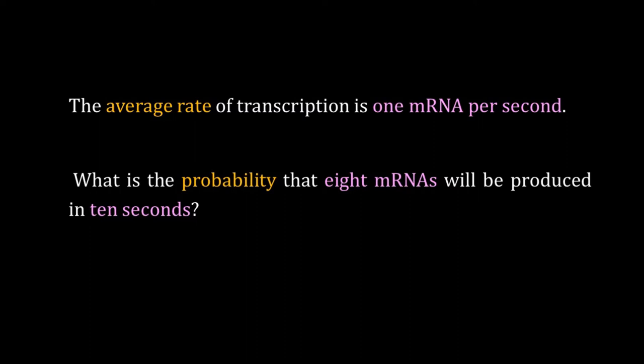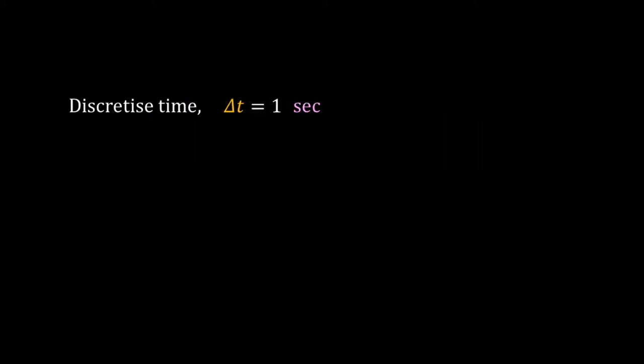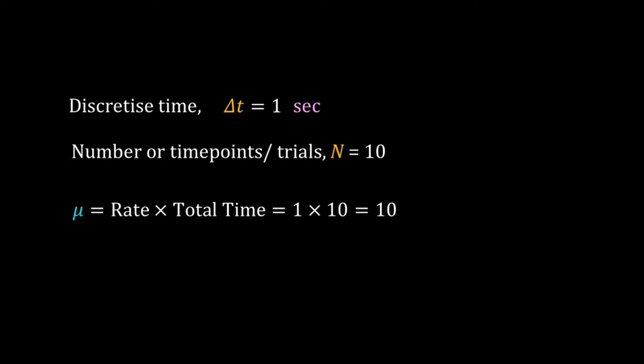Let's calculate the probability using binomial distribution. Break time in intervals of one second, so there are 10 time points in 10 seconds. We can say we have n = 10 trials. On each trial either a mRNA is produced or nothing happens. The average number of mRNA produced is 10. In binomial distribution, mean equals n times p, so the probability of having a mRNA, p, equals μ/n, that is 1.